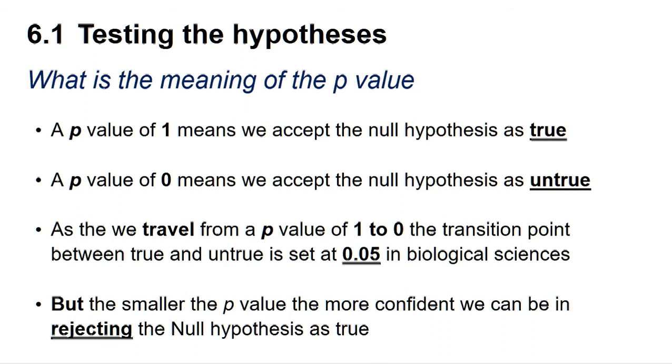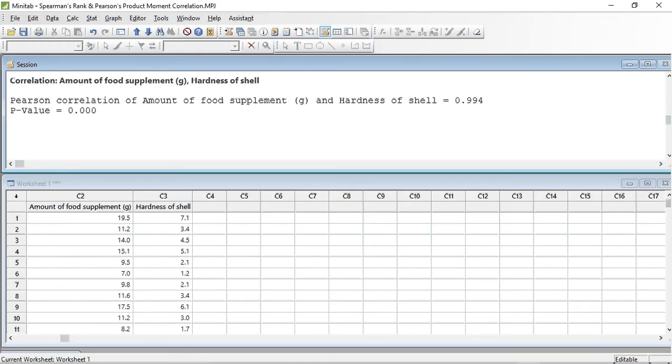And for some experiments, a transition p-value of 0.01 or even 0.001 may be preferable. The p-value as stated is 0, suggesting we can reject the null hypothesis and that our data is correlated. In reality, Minitab is telling us that the p-value is below 0.000.